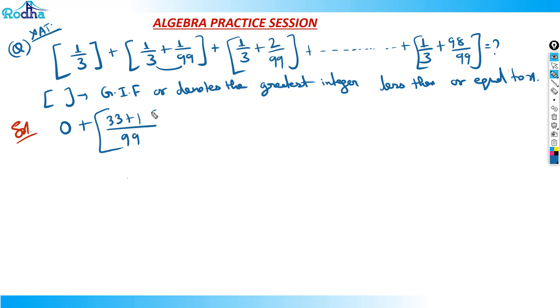Similarly, if I make the denominator same here it becomes 99. This is again 33 plus 2 is 35 by 99 correct. So you got the pattern here. This is 0, this is 34 by 99, this is 35 by 99, and this will go on till...